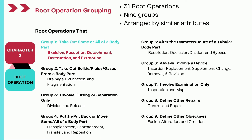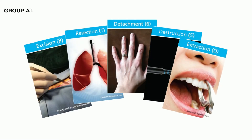There are 31 root operations in the medical and surgical section alone, and these root operations are divided into nine groups based on similar attributes of surgical procedures. Today we are looking at the first group, which talks about the root operations that take out some or all of a body part. There are five root operations in this first group: excision, resection, detachment, destruction, and extraction. We have already seen what excision and resection are in our previous videos.